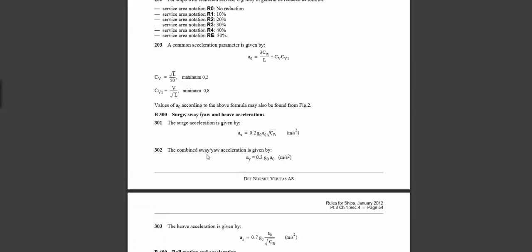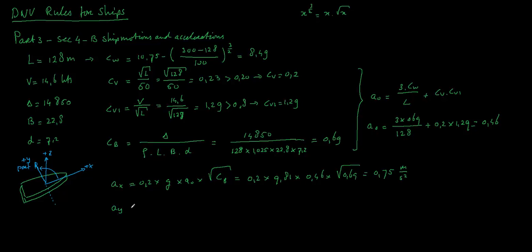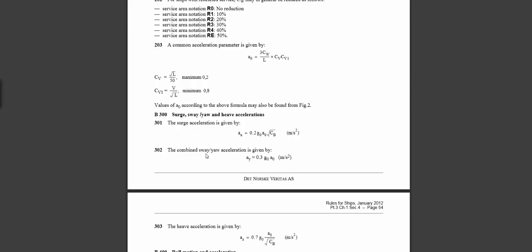Let's go to the sway-yaw acceleration. Ay equals 0.3 times g times a0. Fill in the numbers: 0.3 times 9.81 times 0.46 equals 1.35 meters per second squared. This is our sway-yaw acceleration combination.